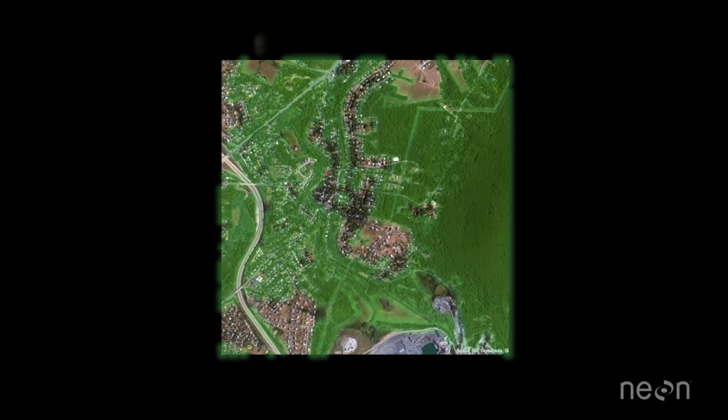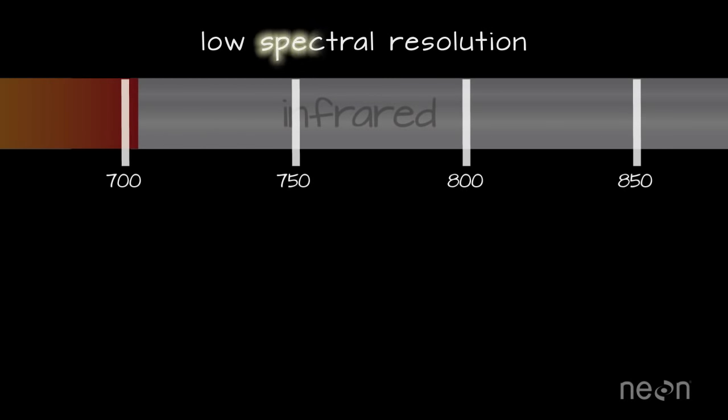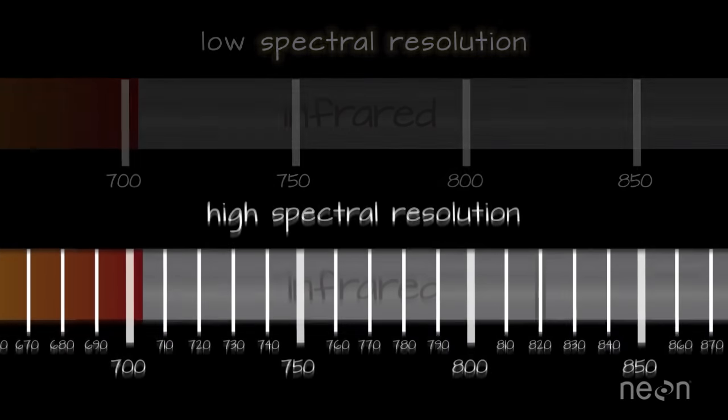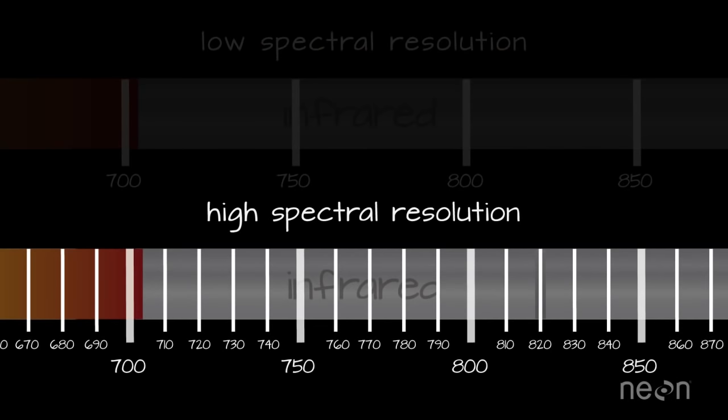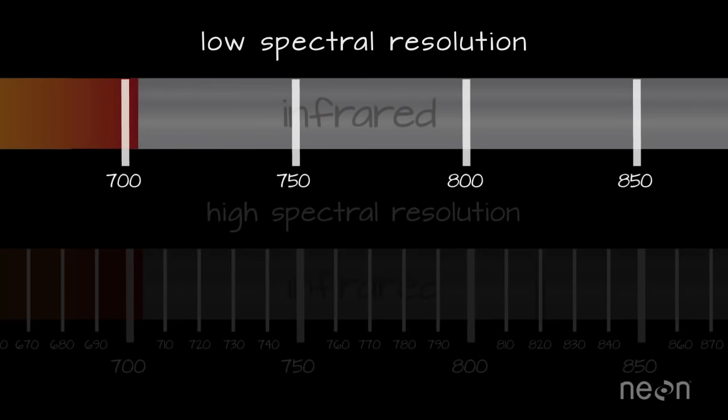This band is useful to map healthy vegetation. The width and number of bands is what we call the spectral resolution of an image. Higher spectral resolution means more bands that are spectrally more narrow. Lower spectral resolution means fewer bands, each of which covers more of the spectrum.